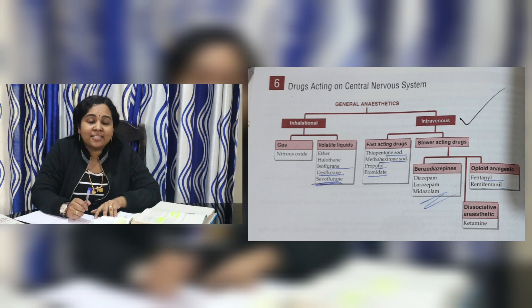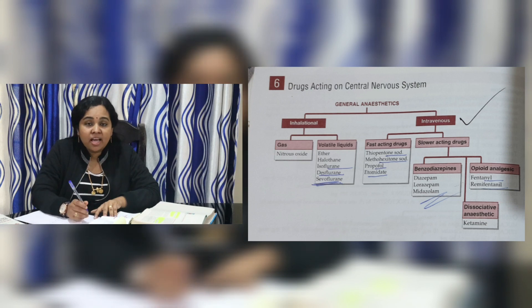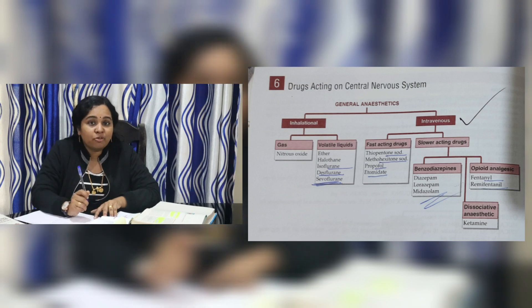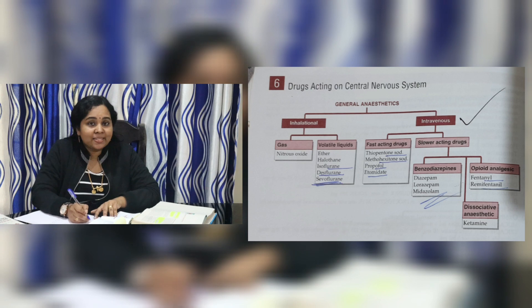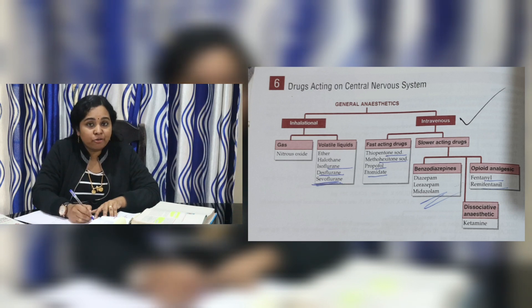To summarize, General Anesthetics are classified into Inhalational Anesthetics and Intravenous Anesthetics. Inhalational Anesthetics are classified into gas and volatile liquids. Gas is nitrous oxide; volatile liquids are ether, halothane, desflurane, isoflurane, and sevoflurane.